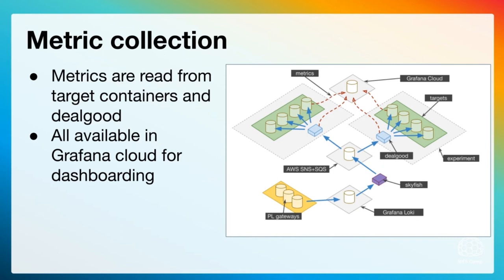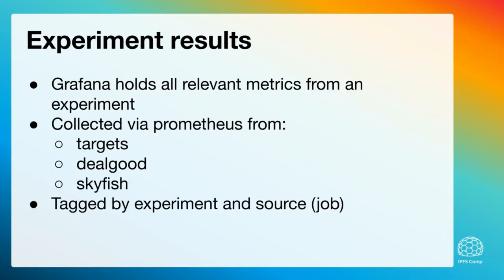All the components in the system are implemented with metrics and we use Grafana agent to pull metrics out of the containers and the ECS machines that run them, but also out of DealGood and Skyfish and the queues. All of this gets pumped into Grafana and we can build interesting visualizations from that. We collect target metrics via Prometheus — the containers just need to expose a Prometheus endpoint and the Grafana agent will scrape those metrics and send them up to Grafana Cloud. DealGood exports request and response timings, and Skyfish exports metrics around the behavior and stability of the incoming request feed.